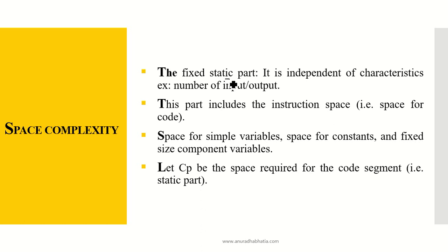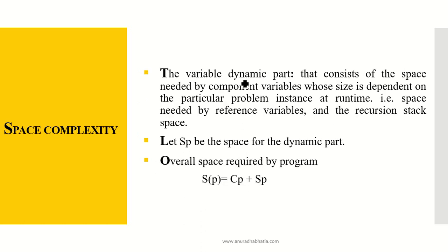The static part includes instruction space — the space required for the actual code — space for simple variables, space for constants, and fixed-size component variables. Let CP be the space required for the code segment; the static part of the code is known as CP. The second part is the variable or dynamic part, which consists of space needed by component variables whose size depends on the particular problem instance at runtime — so the dynamic part varies at runtime.